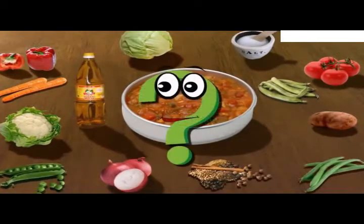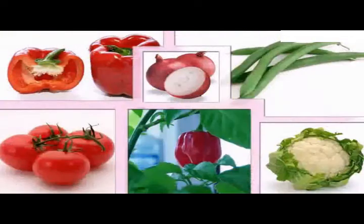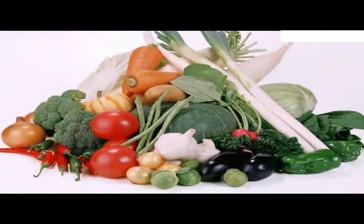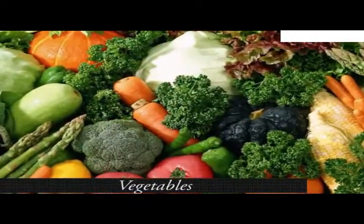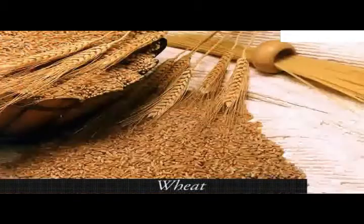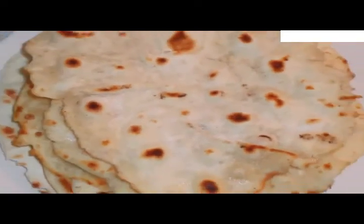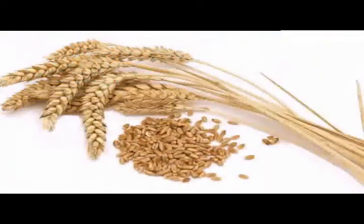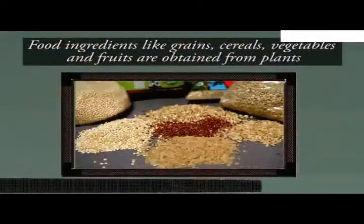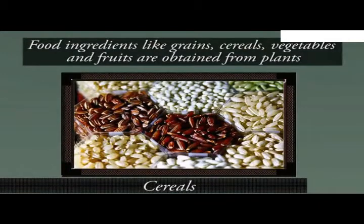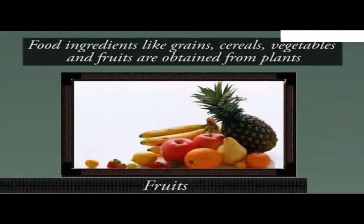Can you tell what these ingredients are called? Yes, these are different vegetables and are obtained from different plants. Plants are a rich source of food ingredients. Plants are a source of not only vegetables but different fruits as well. But can you tell the source of rice or wheat that you eat? You must have seen wheat or paddy fields — this is where we get these grains from. We can therefore conclude that food ingredients like grains, cereals, vegetables and fruits are all obtained from plants.